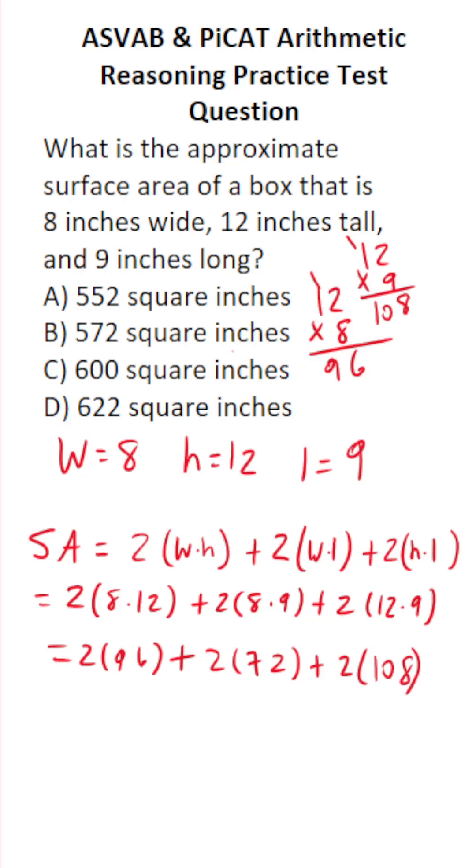All right, so now we've got to work out 2 times 96, 2 times 72, and 2 times 108. I'm going to do that down here. 96 times 2. 6 times 2 is going to be 12, carry a 1. 2 times 9 is 18, 19. So this is 192.